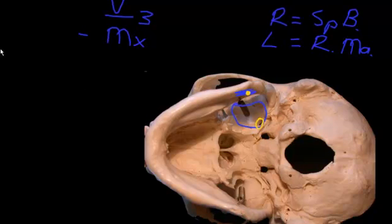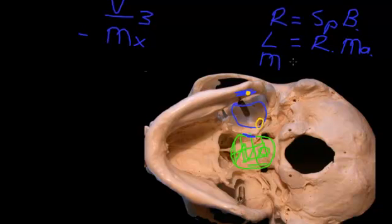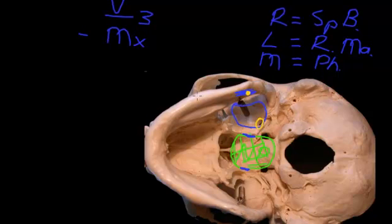The medial wall of the infratemporal fossa is a tricky thing to understand. This is the very top of the pharynx — full of air — the nasopharynx. So the medial wall of the infratemporal fossa equals the pharynx. That's true on the left and right side. When you look into someone's mouth and look to the side where you see the tonsil sitting, that is actually the medial wall of the infratemporal fossa.